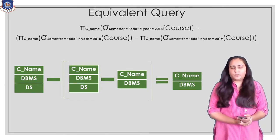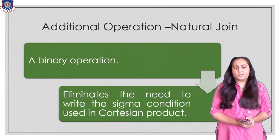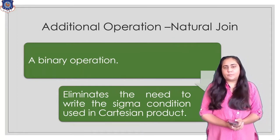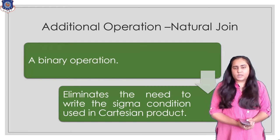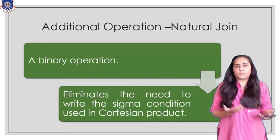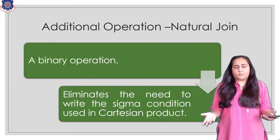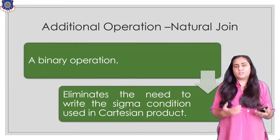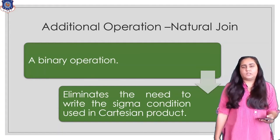Now let's see another additional operation called natural join. It is a binary operation and it eliminates the need to write the sigma condition with Cartesian product. Whenever we do a Cartesian product and want to fetch rows where some column matches another column, we need a sigma condition. If you want to remove that, you can use a natural join.